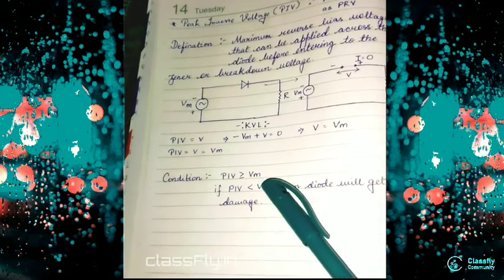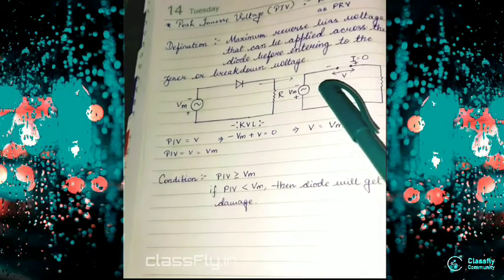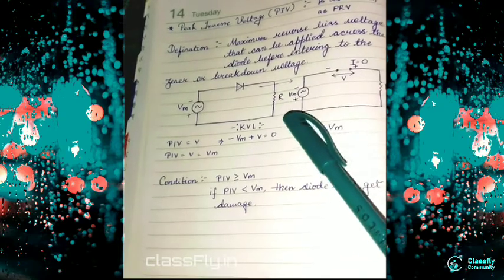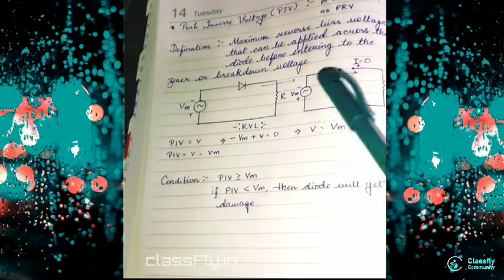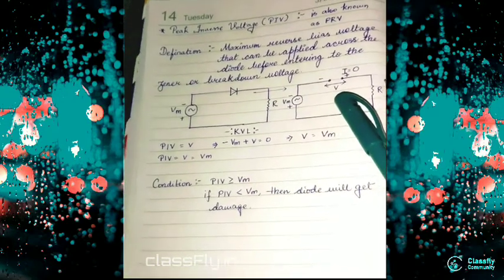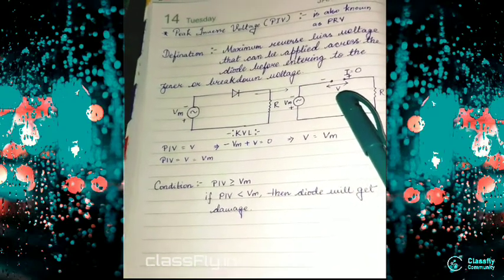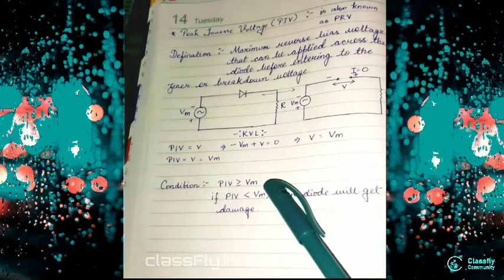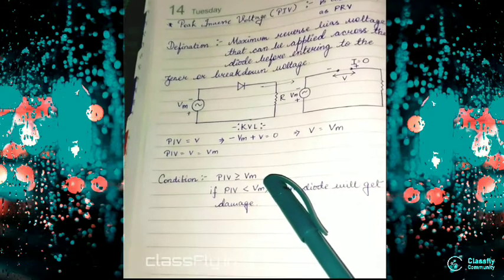PIV must always be greater than or equal to V_m. Why? If V_m is greater than PIV, then the diode will get damaged, and we won't get the output. So for protection of the diode, PIV ≥ V_m.